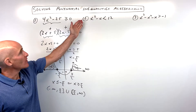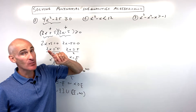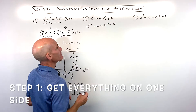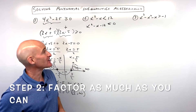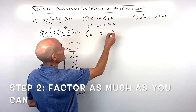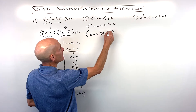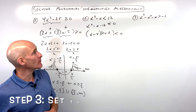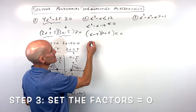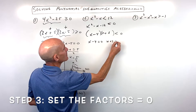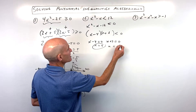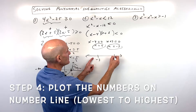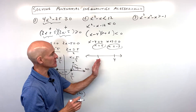Let's look at another example. For number two, we have x² minus x is less than 12. Remember, step one: get everything on one side and set it to zero. Step two: factor as much as you can. What multiplies to negative 12 but adds to negative one? That's negative four and positive three. You can check your work by FOILing this out. Step three: set each factor to zero. Adding four to both sides gives x equals 4, and subtracting three gives x equals negative 3. Step four: plot on the number line from lowest to highest — from negative 3 to 4.